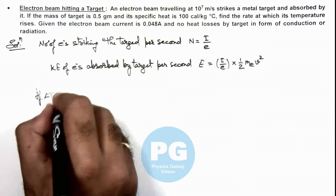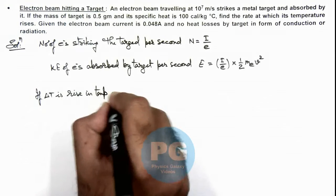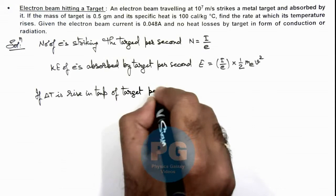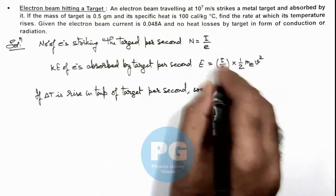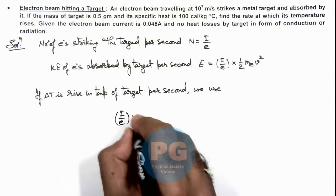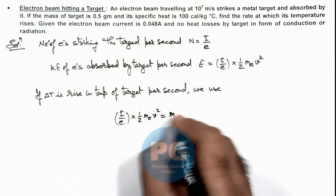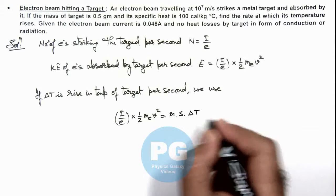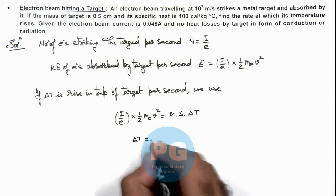If delta T is the rise in temperature of target per second, we can use this much amount of energy which is I by e multiplied by half m_e v squared, should be equal to mass of target multiplied by its specific heat multiplied by delta T. So here this will give us the rise in temperature per second delta T.